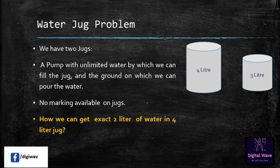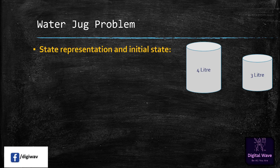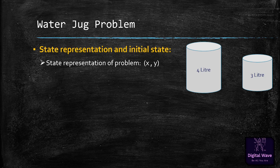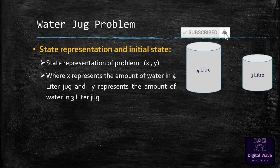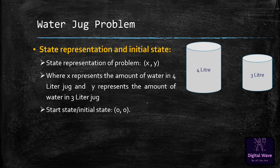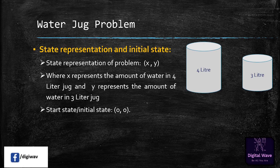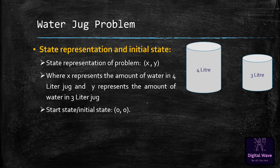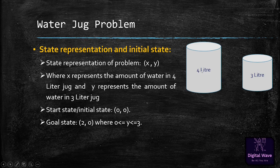We will now look at the state representation and initial state of this problem. The state is denoted by (x, y), where x represents the amount of water in the 4-liter jug and y represents the amount of water in the 3-liter jug. The initial state is (0, 0), where zero denotes the empty 4-liter jug and zero denotes the empty 3-liter jug.